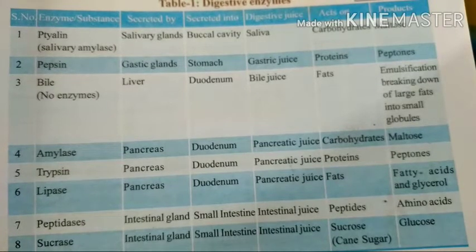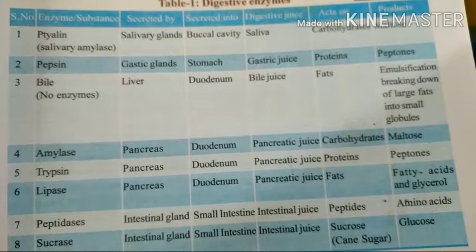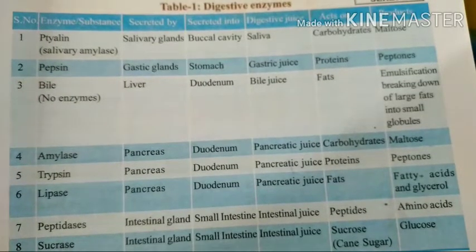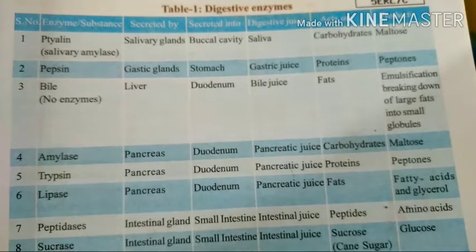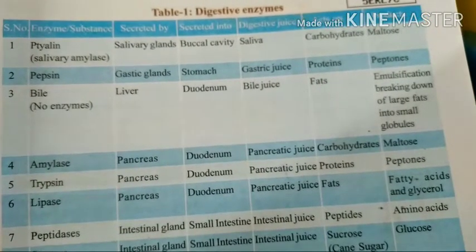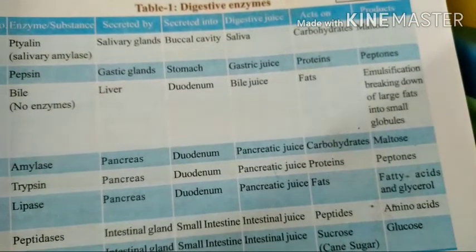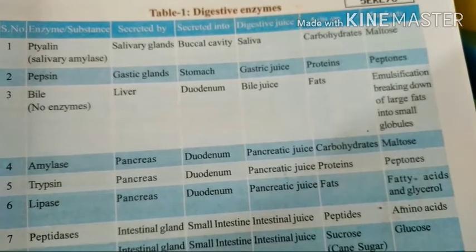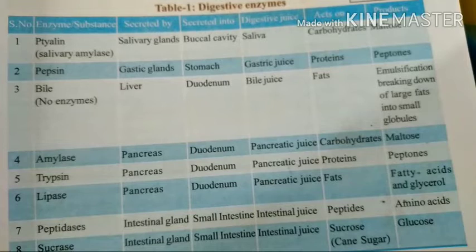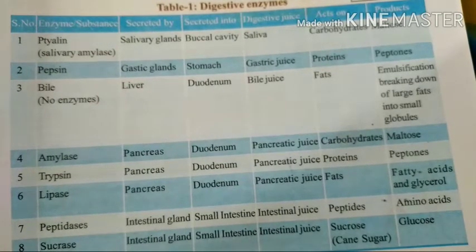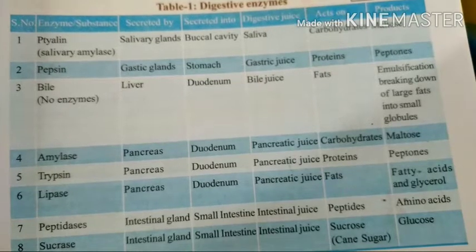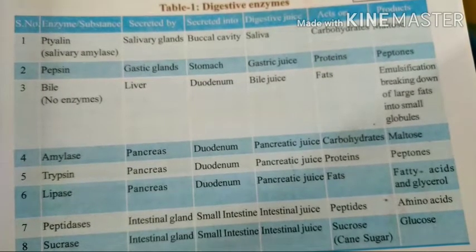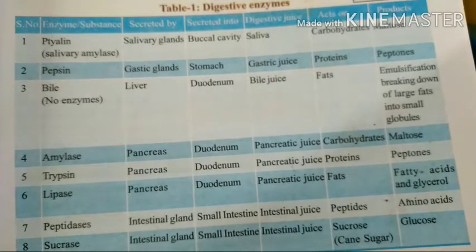Let us go to the digestive systems. Here some of the enzymes are given in our flowchart. The first enzyme is Ptyalin. Ptyalin is nothing but salivary amylase. Starting from the mouth, salivary glands produce salivary amylase, which is secreted into the buccal cavity. The buccal cavity is the space present in the mouth. Ptyalin secretes saliva juice, which acts on carbohydrates, and the end product is maltose.